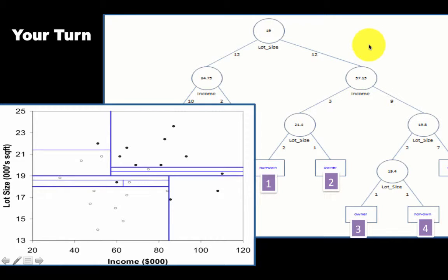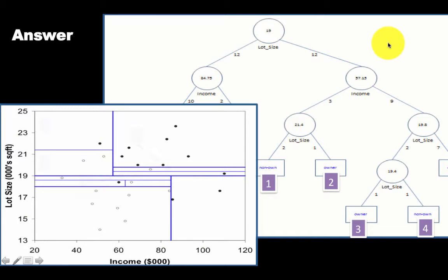It would be a good idea for you to stop the video and look at each of these leaf nodes that we have marked as one, two, three, and four, and identify the corresponding regions on the diagram here. Pause the video, take a look at it, identify the regions, and then you can continue the video and check if your answers were correct. You can verify that these are the four regions that correspond to these leaf nodes.